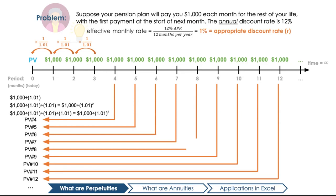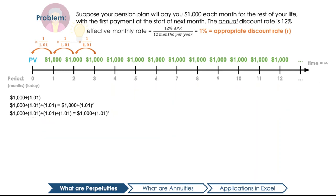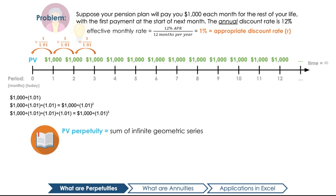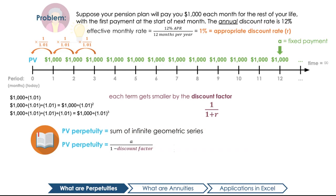But didn't we say that these monthly payments go on forever? So calculating the present value of each one would take, well, forever. Luckily, there's a simple formula we can use instead. You might remember the formula for an infinite geometric series from high school math. A perpetuity is actually an infinite geometric sequence, with each term becoming increasingly smaller as it's divided by (1 + 0.01), which we can refer to as our discount factor. The formula for this is a — our fixed payment — divided by 1 minus the discount factor, which is 1 over (1 + r). But 1 minus 1 over (1 + r) is just r, so our whole formula can be written as a over r.